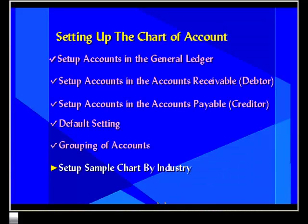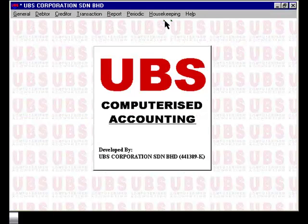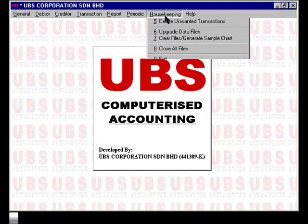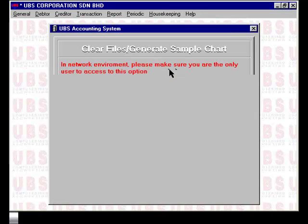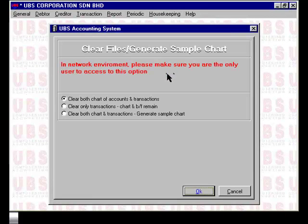The last topic we'll look at is the setup of a sample chart of account by industry. UBS provides templates to set up a default chart of account depending on your industry, which will save you time in setting up your ledger. To generate a sample chart of account, select under Housekeeping option 7, clear files and generate sample chart of account. There are three options available. We'll select option 3, which is the one that will generate the sample chart.